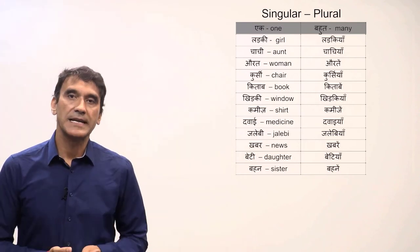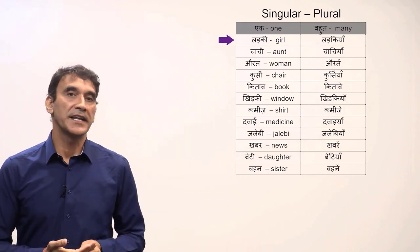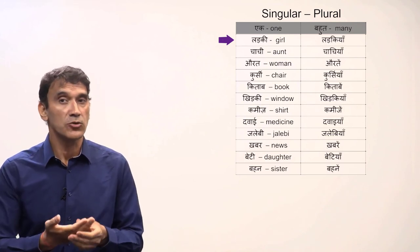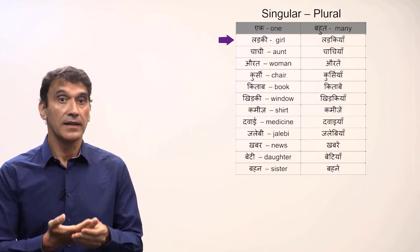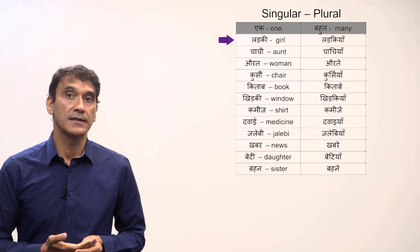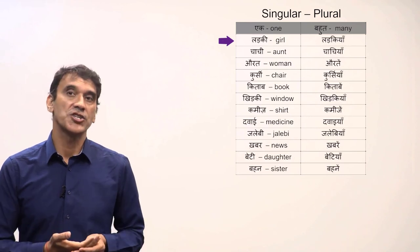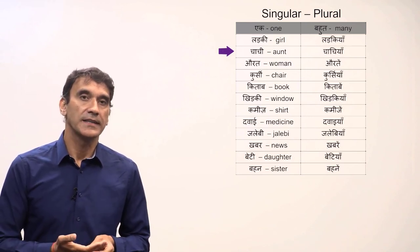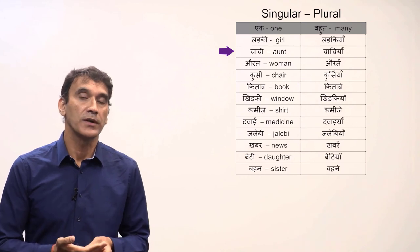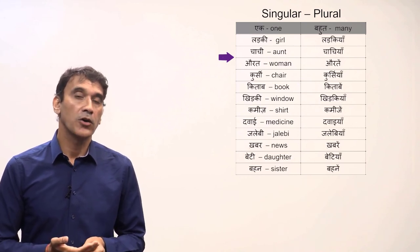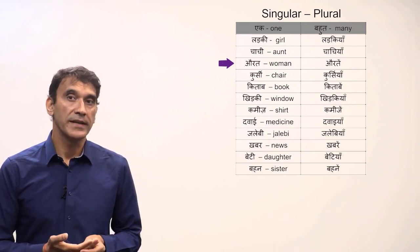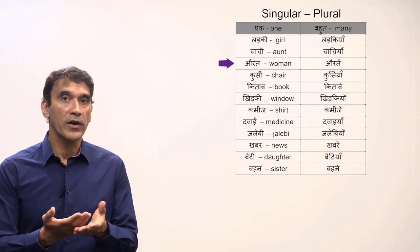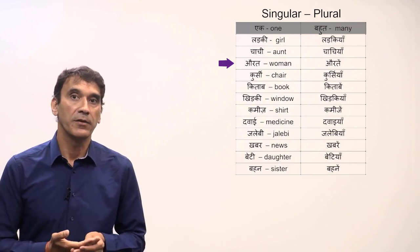Let's take some examples. 'Ladki' meaning 'a girl' — the feminine noun ends in 'ee', so the plural form becomes 'ladkiyan' meaning girls. 'Chachi' meaning 'aunt' also ends in 'ee', so the plural is 'chachiyan' meaning aunts. 'Aurat' meaning 'a woman' does not end in 'ee', so the ending will have an additional 'en' — 'auraten' meaning women.